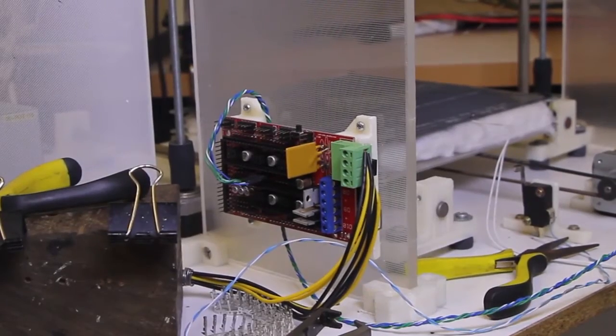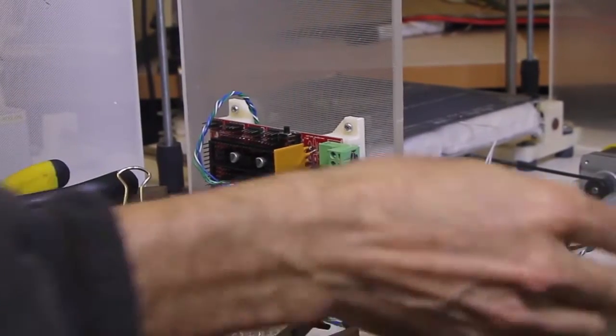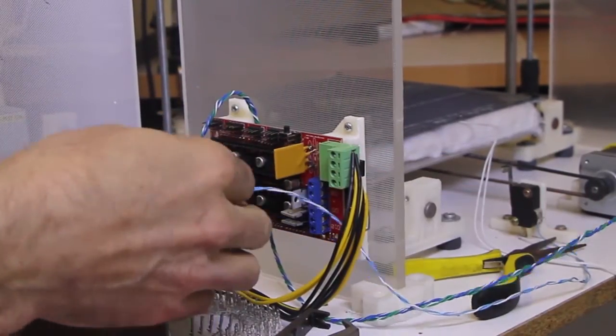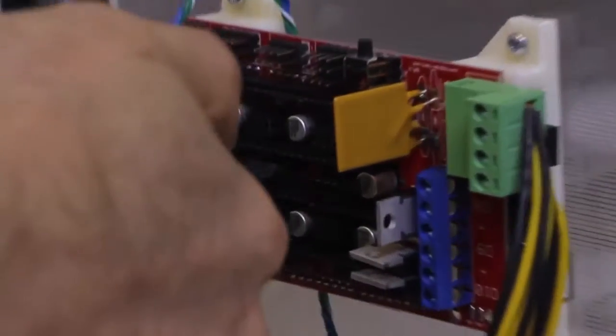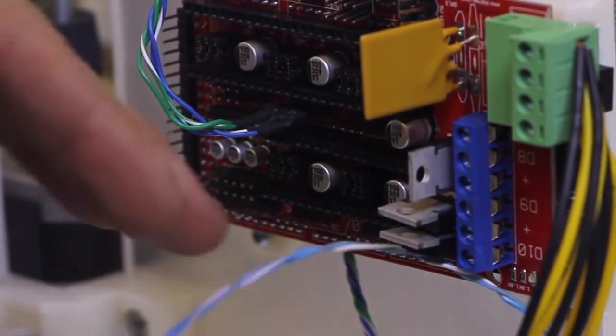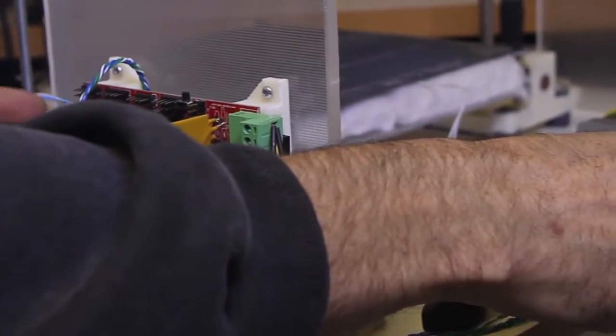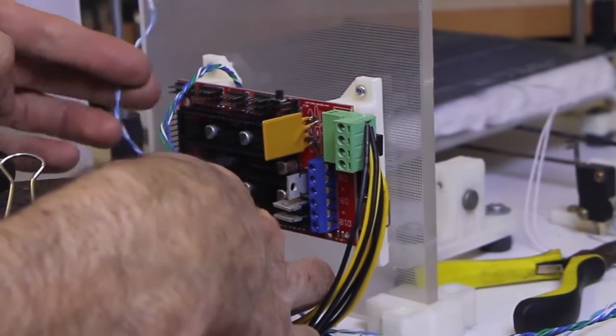Next we're going to wire up the Y endstop. We're going to measure the length of wire. For this one I'm going to run the wire from underneath, so we're not going to curl around. Got the wire sorted with the right length on this end, so you don't want it really tight. We're going to run it reasonably slack.